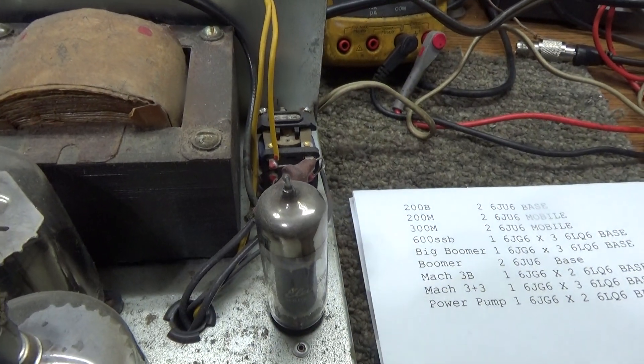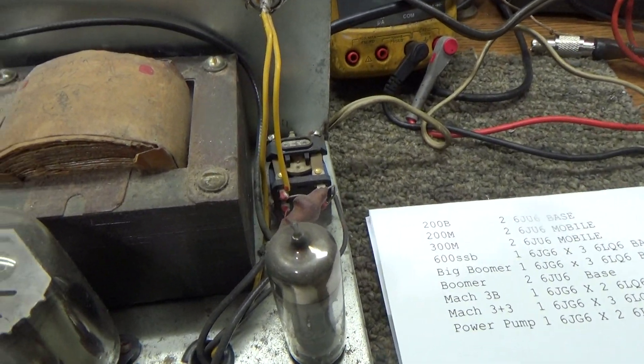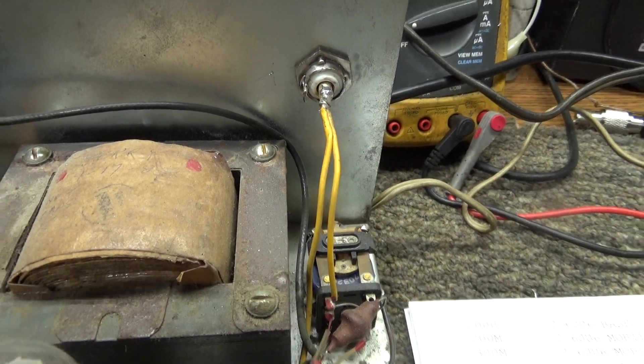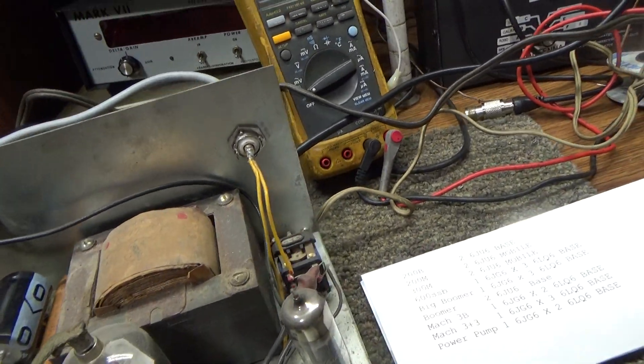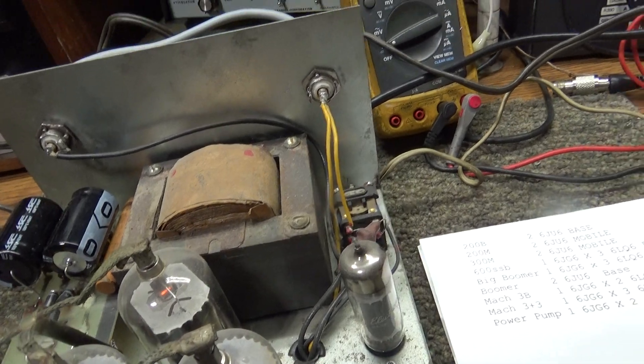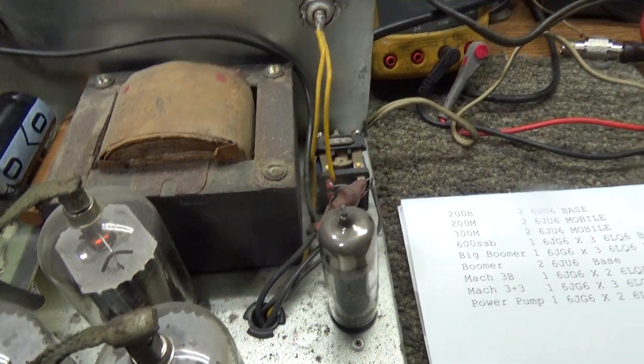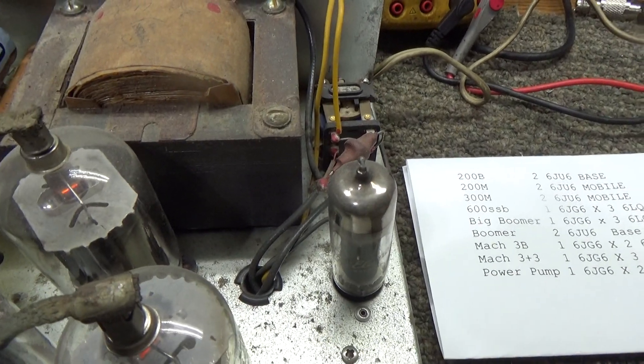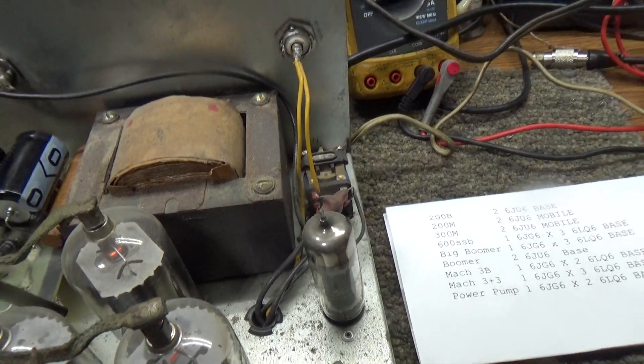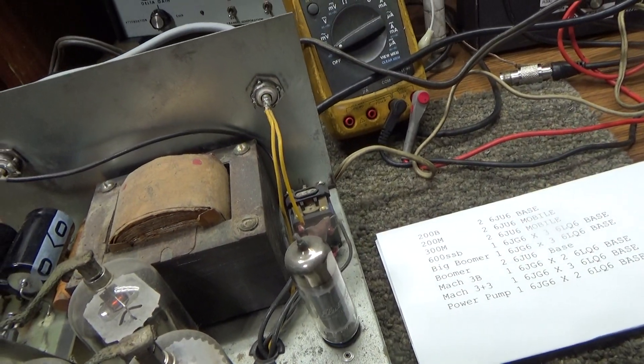This is a little 4 tube amp, all outputs. Come to find out, this little tube over here is a keying tube. All that does is key the relay behind it. It's not a driver tube. Some of these old amps before transistors took over, they use tubes to key the relay and that's what that does.